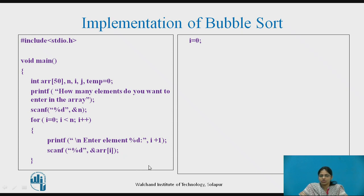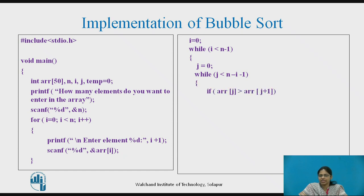Next, initialize i to 0 and use a while loop that repeats while i is less than n minus 1. When the condition is true, set j equal to 0 and use an inner while loop that continues while j is less than n minus i minus 1. Inside, check whether the jth element of the array is greater than the j+1th element. If this condition is true, swapping is performed using a temporary variable.